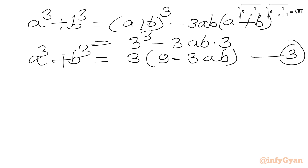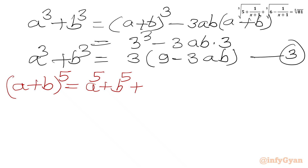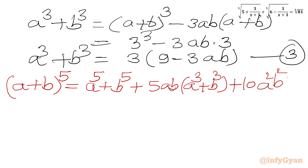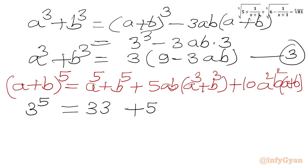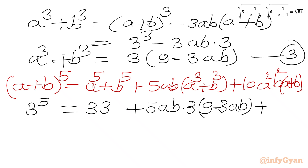Now we will use the binomial expansion. The formula for (a + b)^5 equals a^5 + b^5 + 5ab(a^3 + b^3) + 10a²b²(a + b). Substituting our known values: (a + b)^5 is 3^5. a^5 + b^5 was 33 from equation 2. Plus 5 times ab times (a^3 + b^3), which is 3(9 - 3ab) from equation 3. And a + b is 3, so 10 times 3 gives 30a²b².